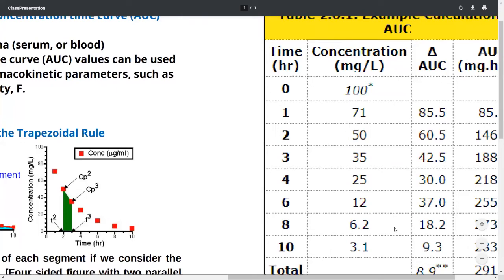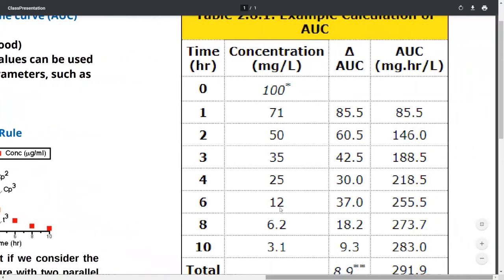Calculating 1 to 2, we get 71 plus 50 divided by 2, which is 121 divided by 2, equals 60.5. Similarly, this goes on and this is the AUC that's cumulative. You add 85.5 plus 60.5 plus 42.5 plus 30, and the cumulative total we get is 291.9.